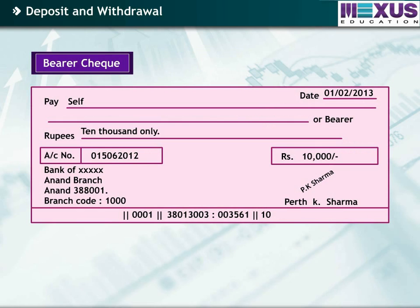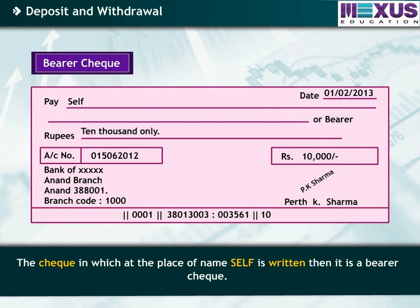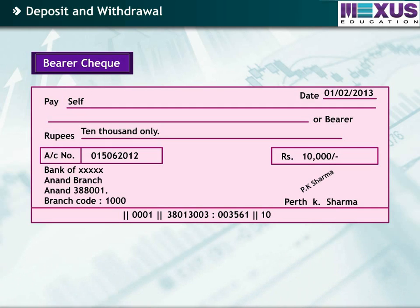The first type is bearer check — a check in which at the place of name, 'self' is written. If any person presents this check in the bank, that person can get the amount in cash. This is the most unsafe check because if the check is lost, then anybody can go to the bank and obtain the money.